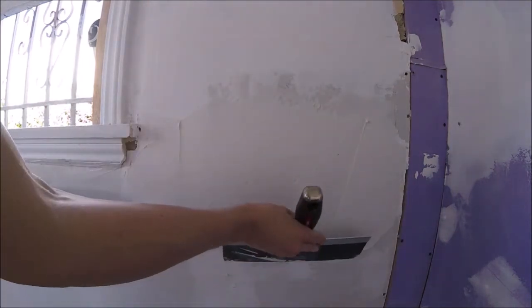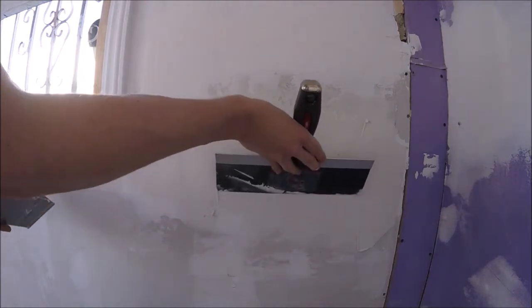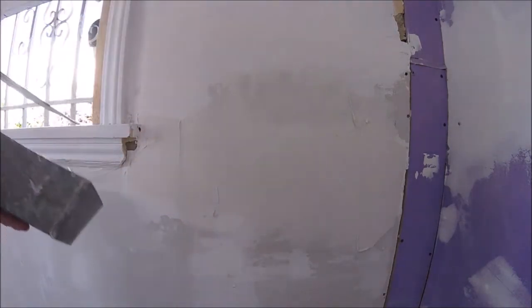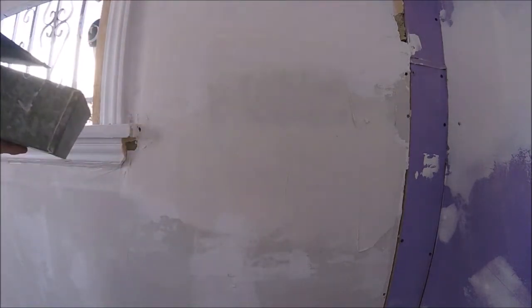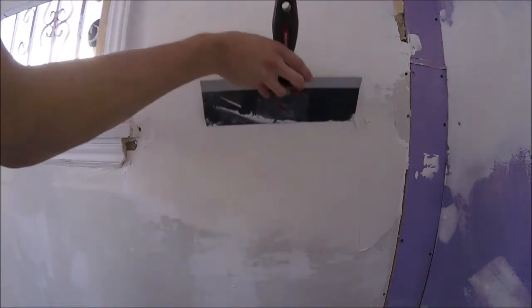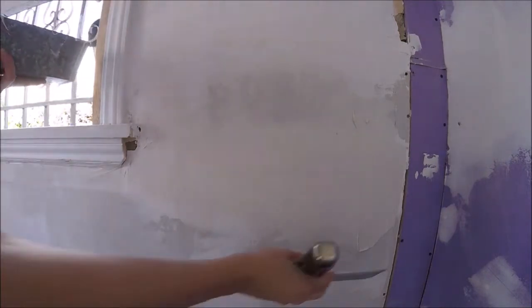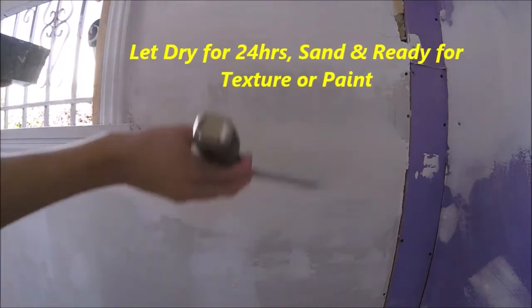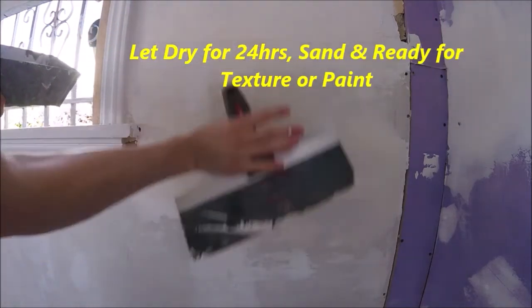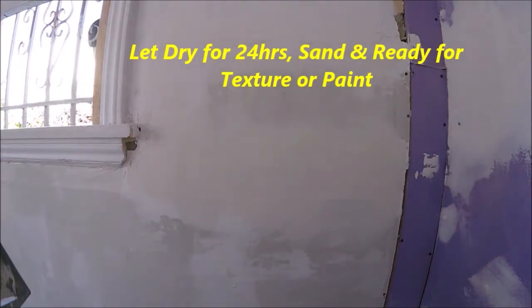So you're going to put more pressure down on the edges than in the middle where the tape is to feather it. So you're going to make that gradual transition, so that when you sand it all down, you won't be able to see that seam at all.